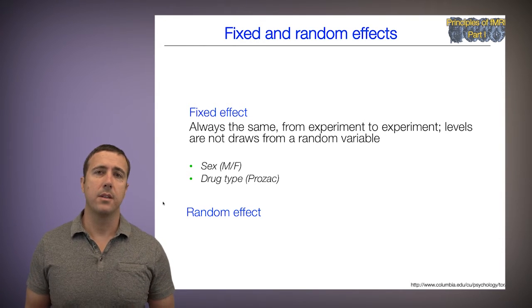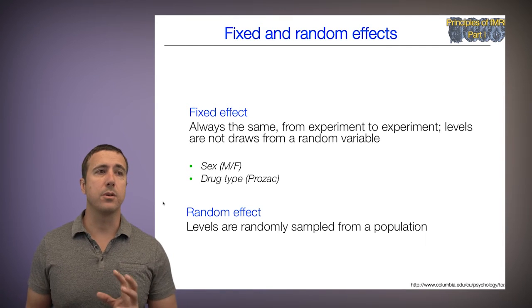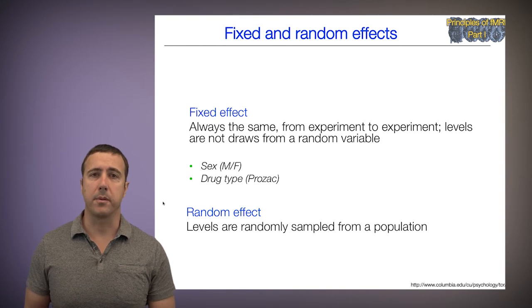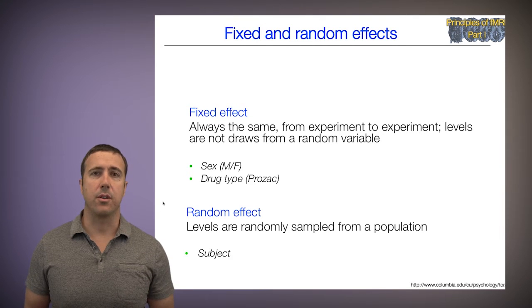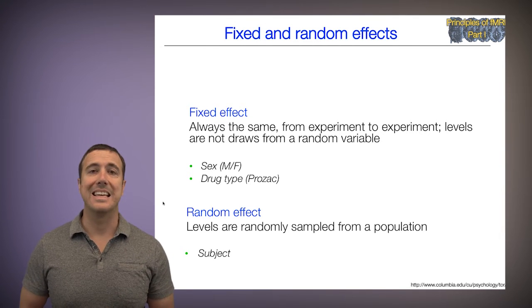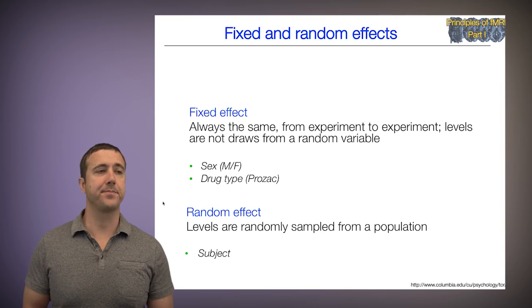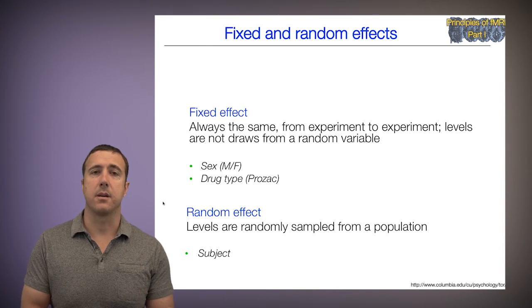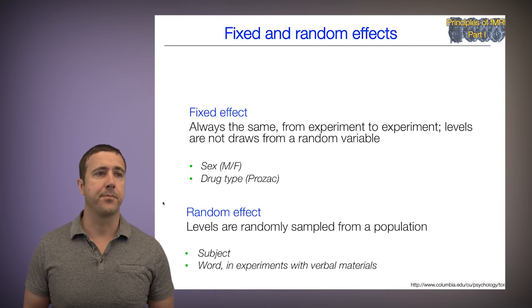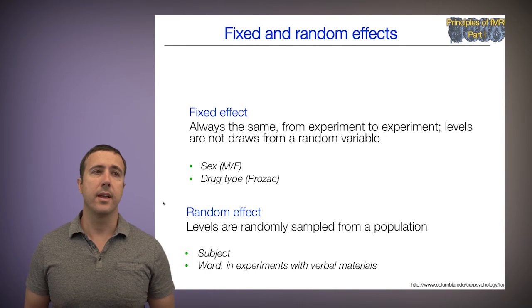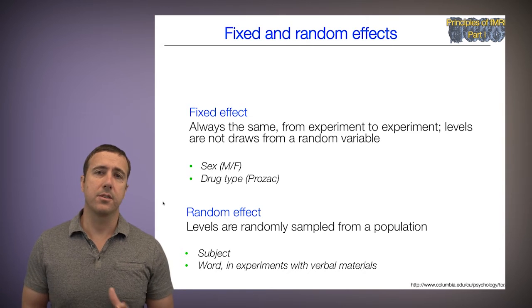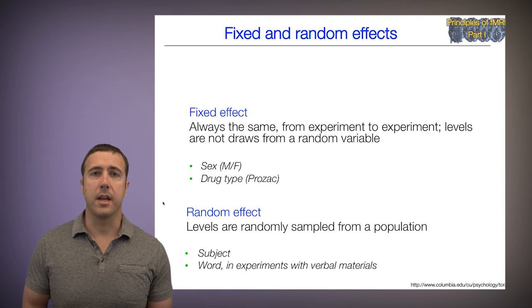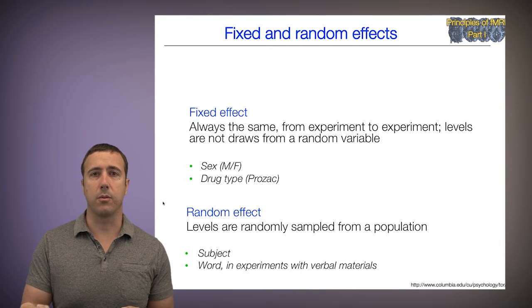Let's look at random effects now. Typical random effects are those whose levels are assumed to be sampled at random from a population. So the quintessential thing that should be modeled as a random effect is subject or participant. We observed some subjects, but we assume that we selected subjects at random from a population. Another example is word, in experiments with verbal materials. So let's say you're studying the effect of positive and negative words.